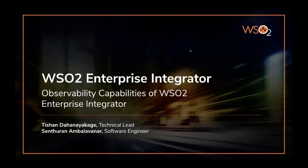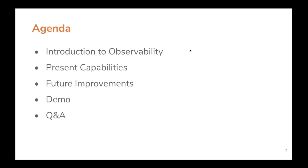Without further ado, let's move on to today's agenda. The first item on the list is a brief introduction into observability — what it means and why we need it. Then Senthuran will explain the present capabilities of the product. After that I will explain what we are planning for the near future to improve customer satisfaction, followed by a lengthy demo and a Q&A session. You can use the inbuilt Q&A window to ask any questions.